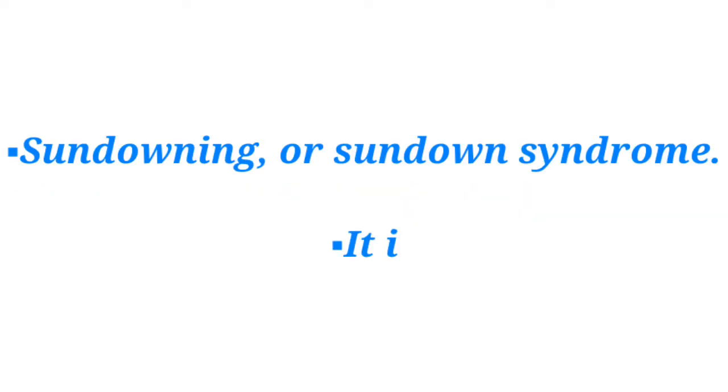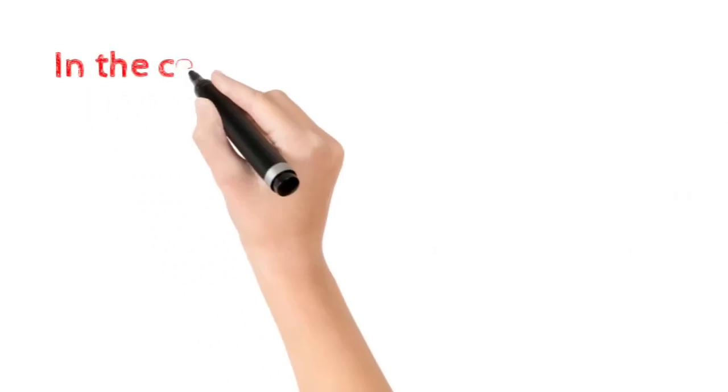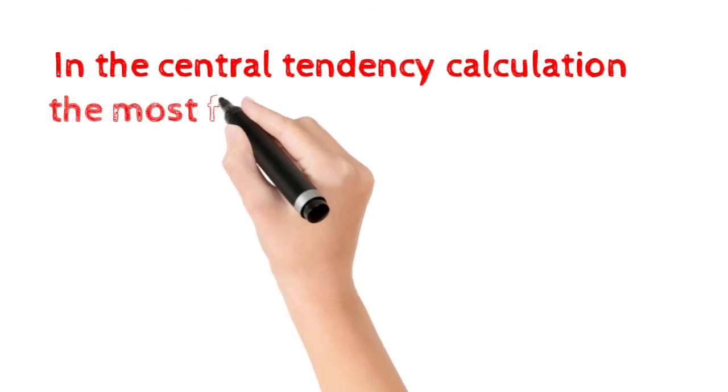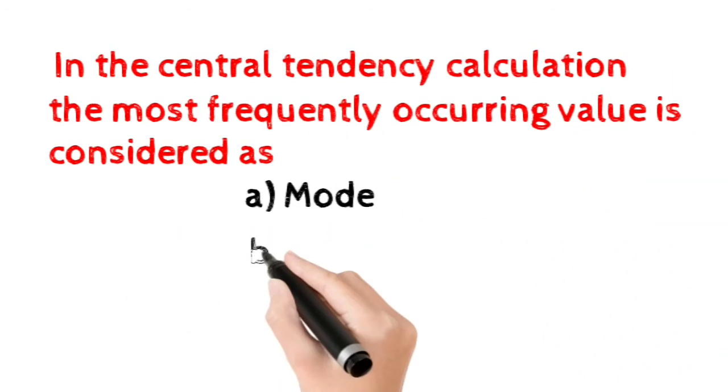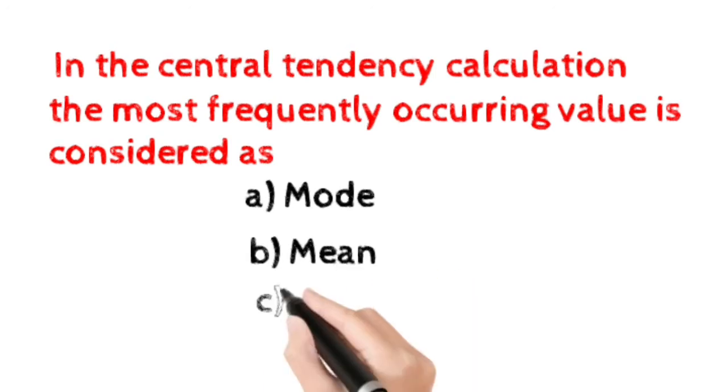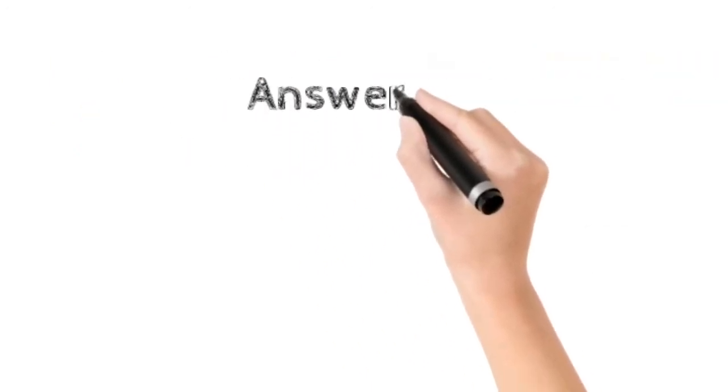Number ten: In the central tendency calculation, the most frequently occurring value is considered as? Option A: mode. Option B: mean. Option C: range. Option D: median. Here the correct answer is option A, mode.